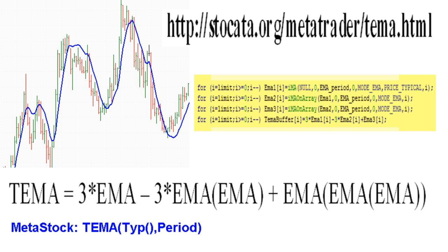TEMA, or Triple Exponential Moving Average, was first introduced in Stocks & Commodities magazine in February 1994 by Patrick Mulloy. The price is passed multiple times through the same filter and then combined. TEMA is actually three times an Exponential Moving Average, minus three times the EMA of the EMA, plus the EMA of the EMA of the EMA.